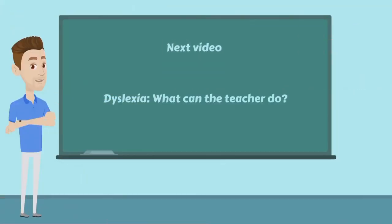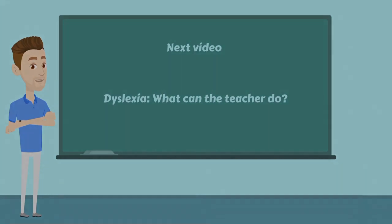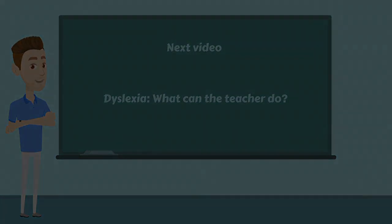It is important to note that all learning disabilities can vary in severity and can affect students in different ways. It is also possible for students to have more than one type of learning disability. There is a video about each of these suggesting ways that teachers can effectively ensure that these students are included and involved in their lesson. The next video provides some ideas that can mitigate the impact of dyslexia and help dyslexic students to succeed in your lesson.